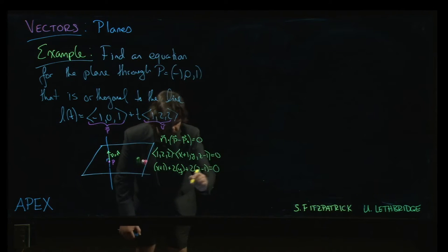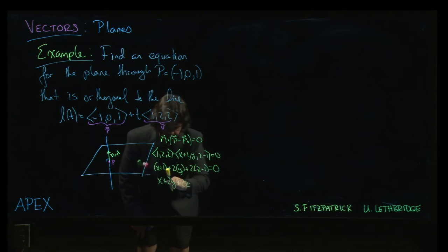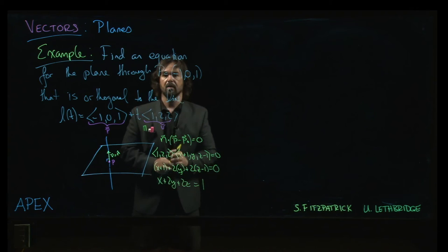If we want the so-called general form, x plus 2y plus 2z, and let's see, we have plus 1 minus 2. So overall, a minus 1 on the left. Bring it over to the right, and we have a 1.